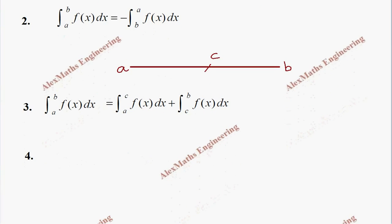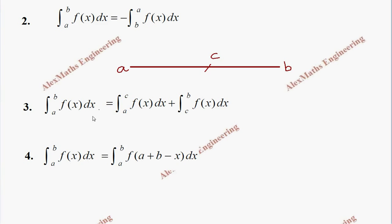Fourth property: when we have integral a to b of f(x) dx, it can also be written as integral a to b of f(a + b − x) dx. We add the lower limit and upper limit together and subtract x, giving f(a + b − x).